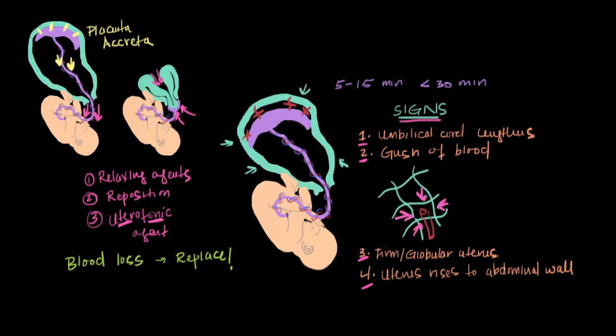Okay, so that's uterine inversion in a nutshell, a condition that teaches us to be, or reminds us to be patient. And to remember that even though the umbilical cord may look like a rope, we're not playing tug of war with the placenta.